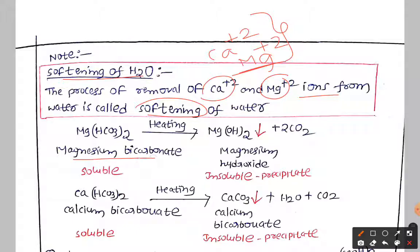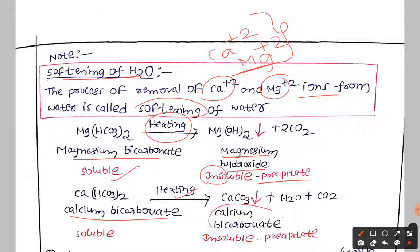Looking at the equations: magnesium bicarbonate on heating is converted into magnesium hydroxide, which is in insoluble form. Once insoluble, it precipitates out and can be separated easily. Calcium bicarbonate on heating precipitates as calcium carbonate — not bicarbonate, so please make that correction in your notes. Calcium carbonate is also insoluble and precipitates out.